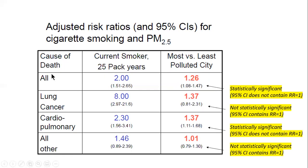Mortality due to all causes had a risk ratio of 1.25, meaning 25% higher risk of dying for the most polluted city compared to the least polluted city. The confidence intervals are between 1.08 and 1.47 — this does not contain a risk ratio of one, meaning no association. Therefore, these results are statistically significant, meaning that even factoring in chance, we still won't get a risk ratio of one to 95% confidence. This gives confidence that the number is real and not a result of mere chance.